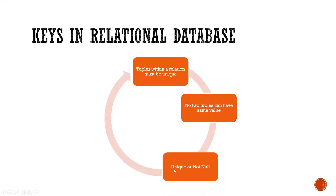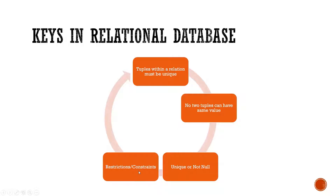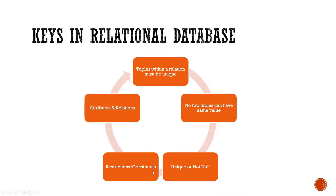When we are using keys in a relational database table, there are some conditions we use to fetch data from the database table. For those conditions, we set restrictions. In relational database language, we call these constraints. So when we use keys in DBMS, with those keys we can set constraints — that is, conditions — and these constraints or restrictions can be applied on the attributes and relations in the relational database table.